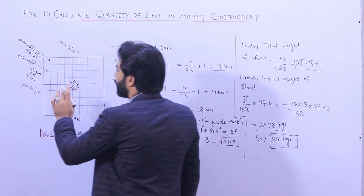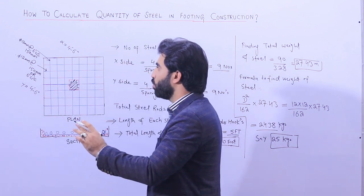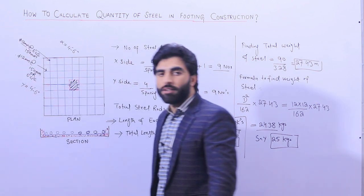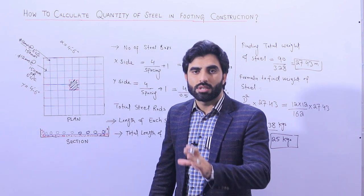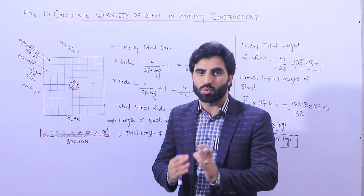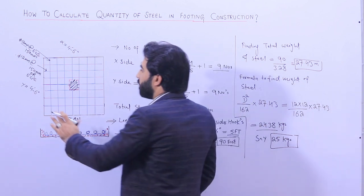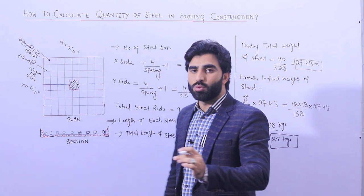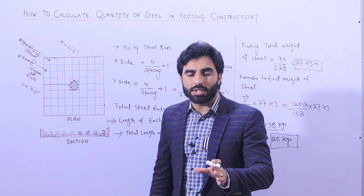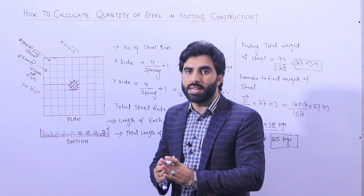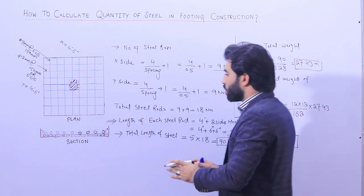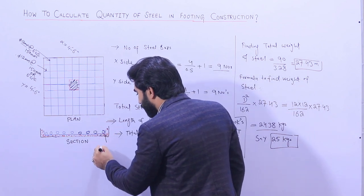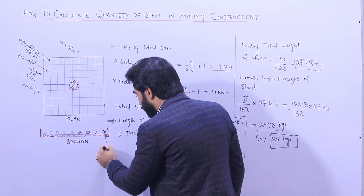First of all, I will tell you the details of the steel reinforcement. We are using here 12 millimeter diameter steel rods with a spacing of 150 mm or 6 inches center to center distance between two steel rods. This applies for both the Y-section and the X-section — for both directions we use 12 mm diameter steel rods with 6-inch spacing. In the section you can see we have a concrete cover on each side, which is 3 inches.